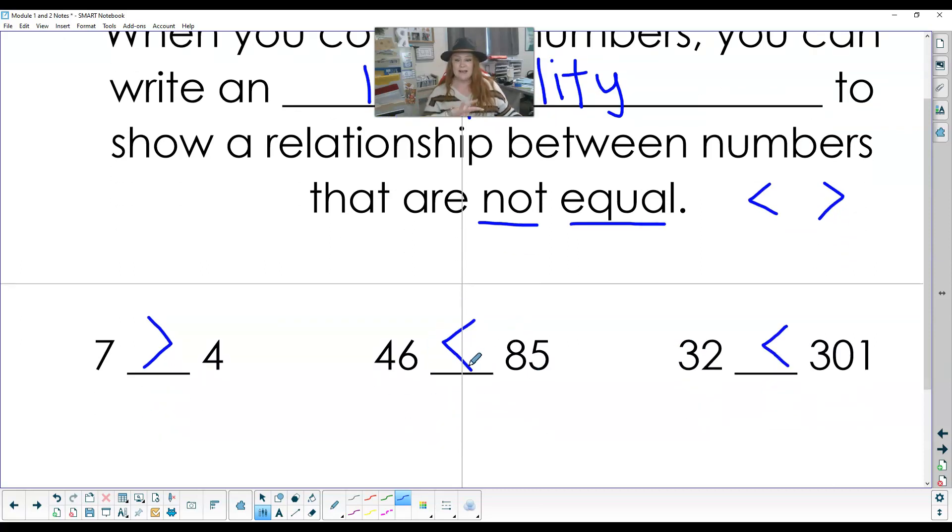I can actually take these and flip them. And I could write that four is less than seven. So seven is greater than four. Four is less than seven. So every inequality has two ways to write it. You just flip it and start from the back. 85 is bigger than 46. 301 is greater than 32. So I could say 32 is less than 301. 301 is greater than 302.